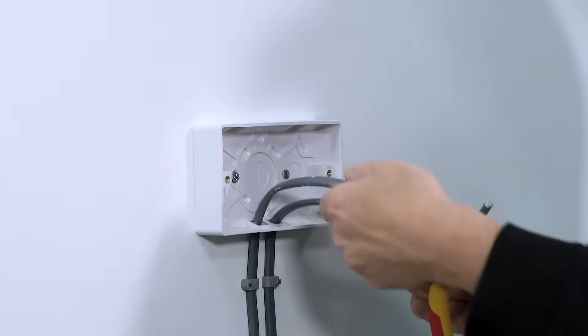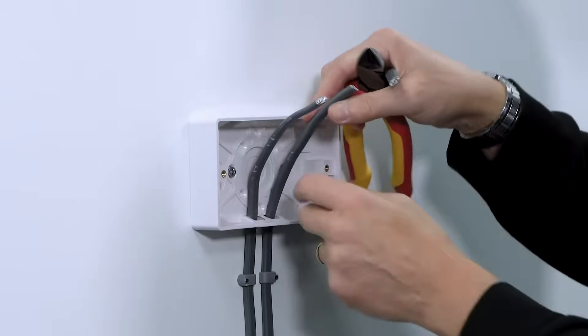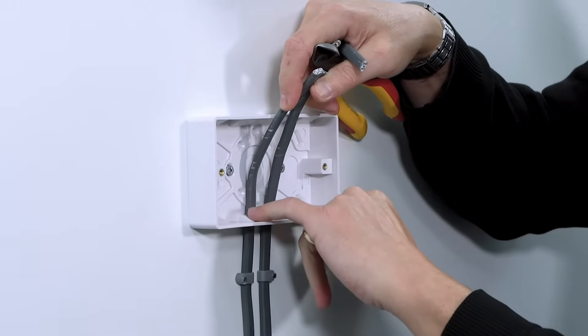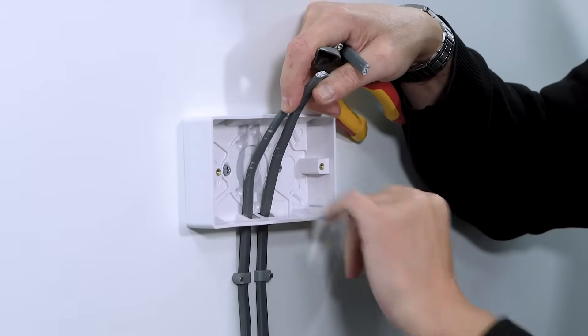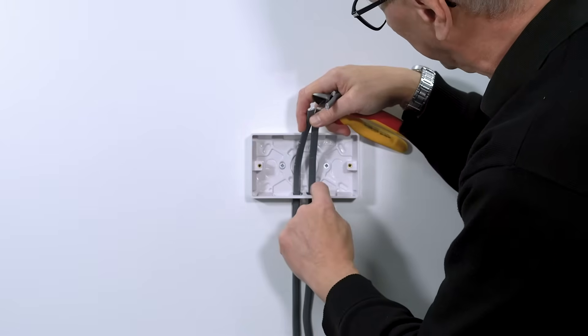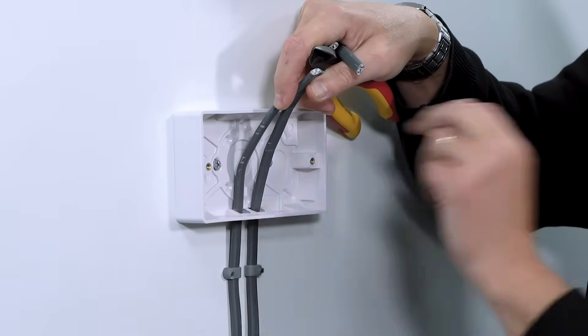Now we have to remove this outer sheath. We don't want to take too much off, but we don't want to take too little off either. We want to take it off to a few millimeters inside the box there. We don't want any conductors showing outside of the box, so we must make sure that the outer sheath comes into the box, but not by too much.